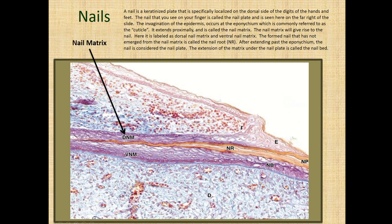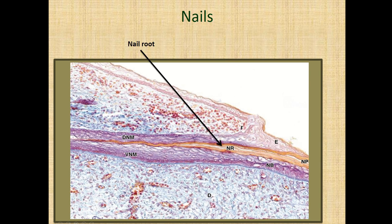You can see the dermis underneath here with these little blood vessels containing red blood cells. You can see how vascularized the underlying dermis is — which, you know, you can see through nails and observe the vascularity beneath.